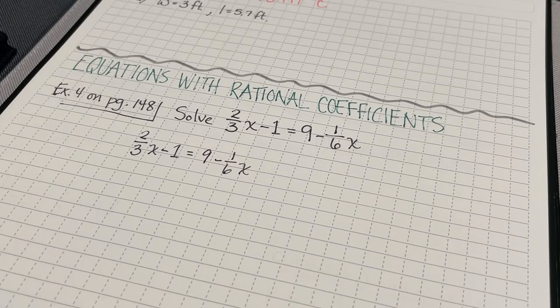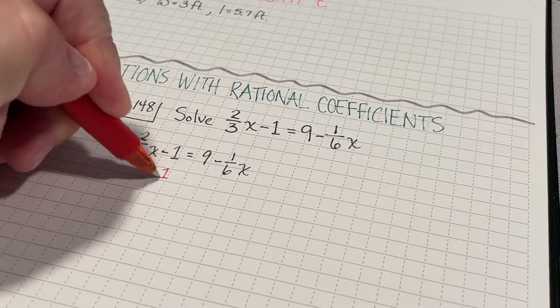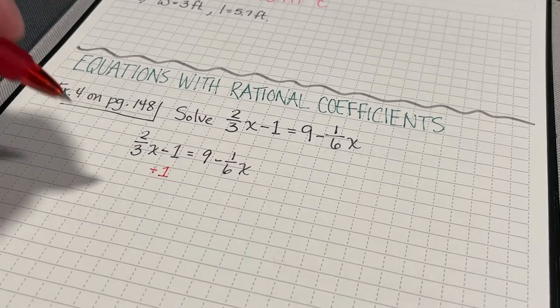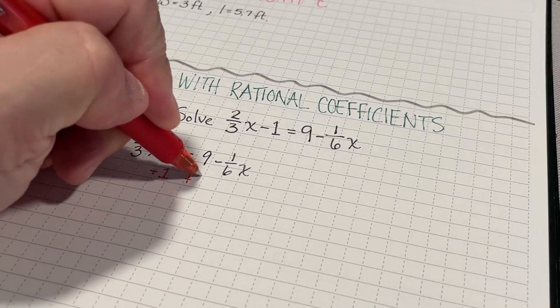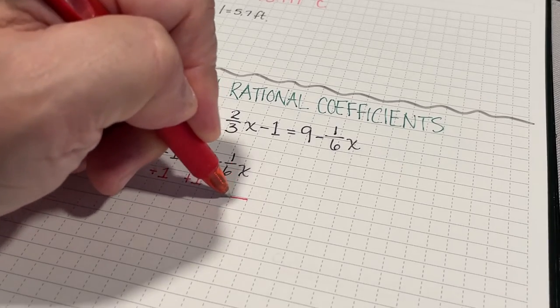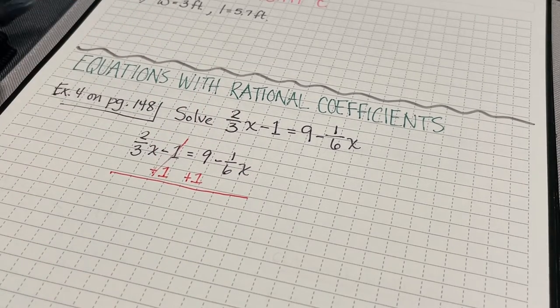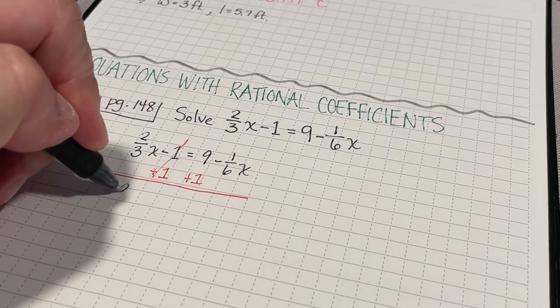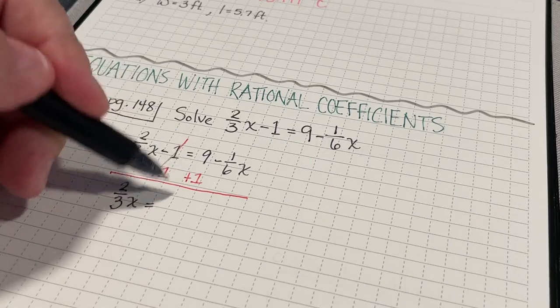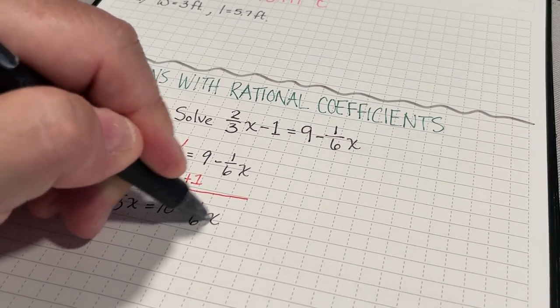My first step is that I'm going to add one to each side. I could have dealt with my x's first, but I'm going to save that to the end. So, I'm adding one to both sides. I'm adding one because it's saying I'm subtracting one, so I need to do the opposite of that. That's just going to be zero. So, I'm going to have two-thirds x equals 9 plus 1 is 10 minus 1/6x.